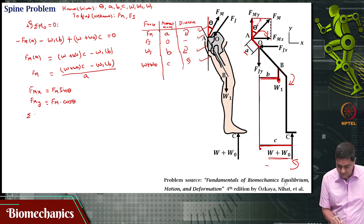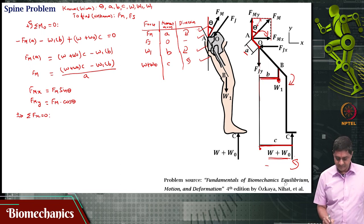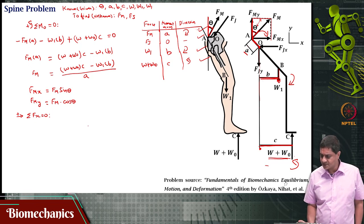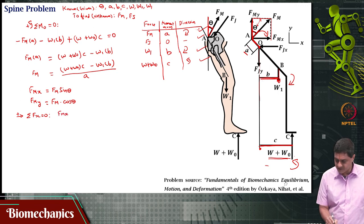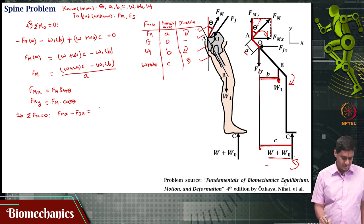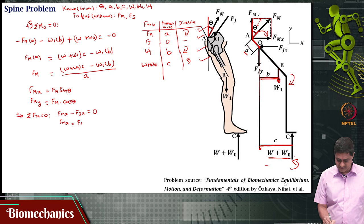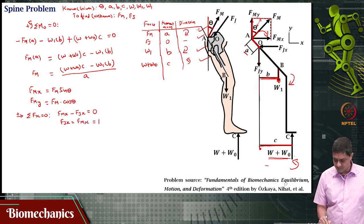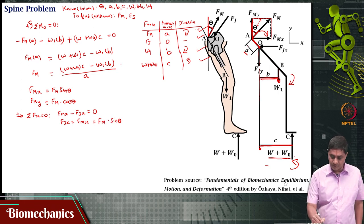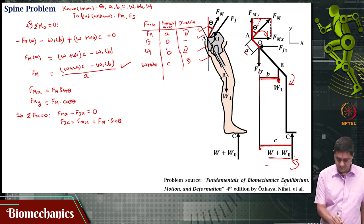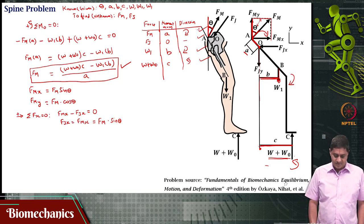Writing sigma Fx equals 0, with rightward positive: there are only two forces in the x direction — Fm_x acting in the positive x direction and Fj_x in the negative x direction. This gives Fj_x equals Fm_x equals Fm sine theta, where Fm has already been computed.